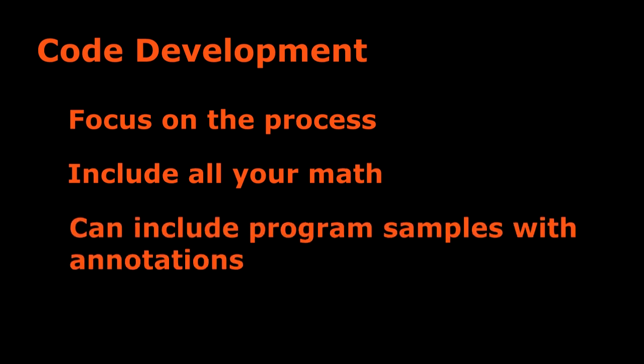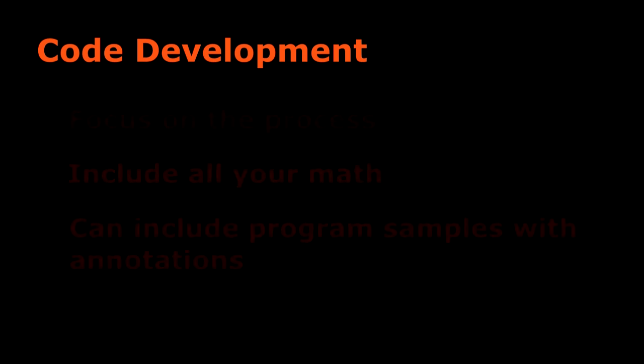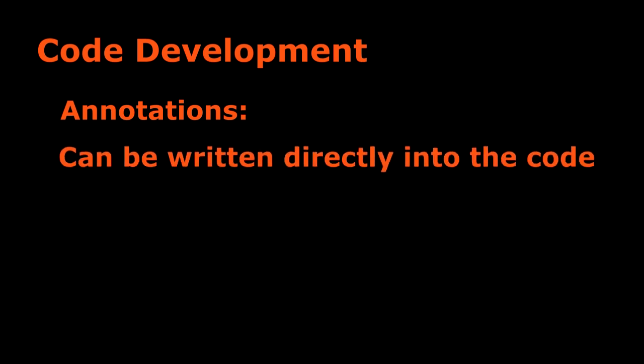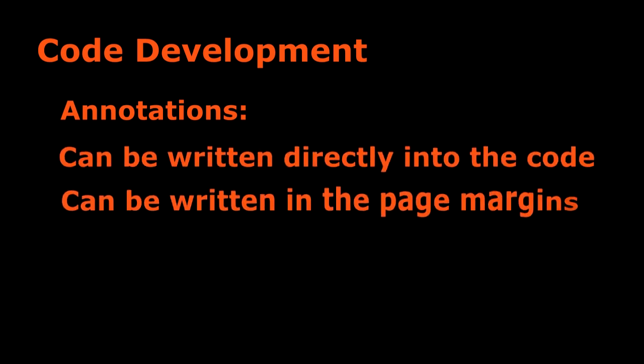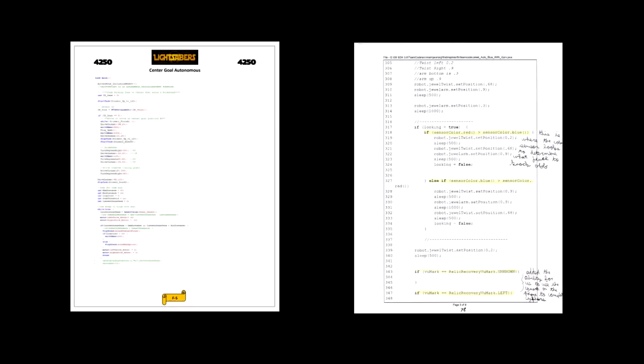A lot of teams include some of their programs in their programming section, but you don't have to if you don't want to, and you don't have to include all of them. If you do include your programs though, you should also write annotations describing what the program does at different points in the program. There are two ways you can do the annotations: you can either write them directly into the code, or write them into the margins of the code. The example on the right is from our team three years ago and has the annotations written in the margins of the code. The example on the left has the annotations written directly into the code.